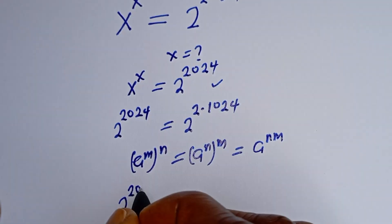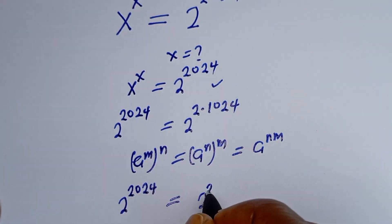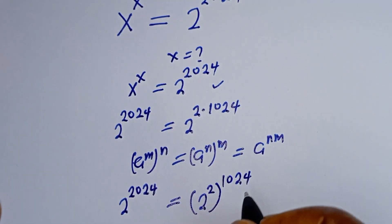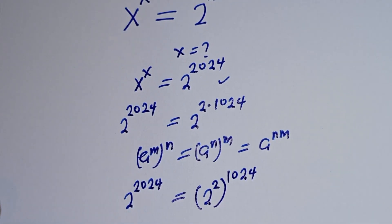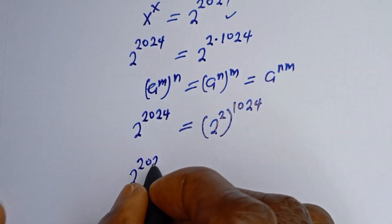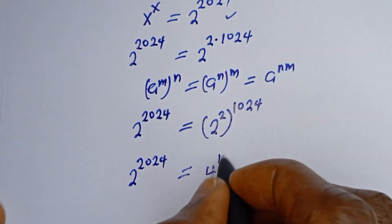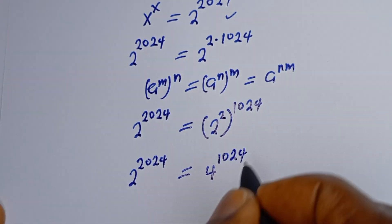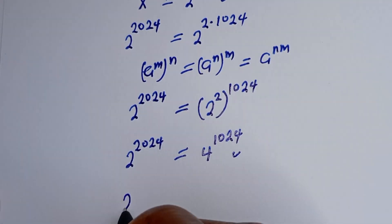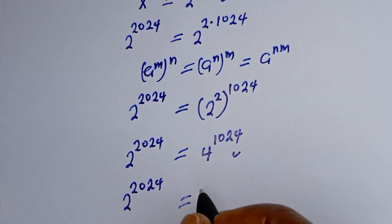So 2 to the power of 2024 is equal to 2 squared, to the power of 1024. Then 2 to the power of 2024 is equal to 2 squared — which is 4 — to the power of 1024.